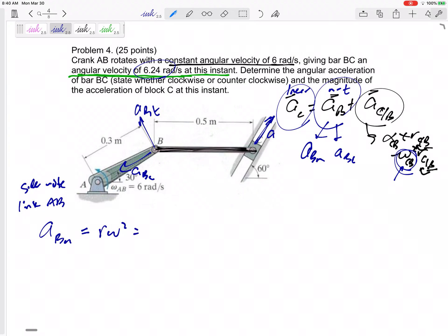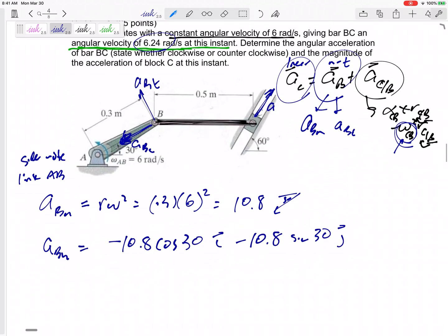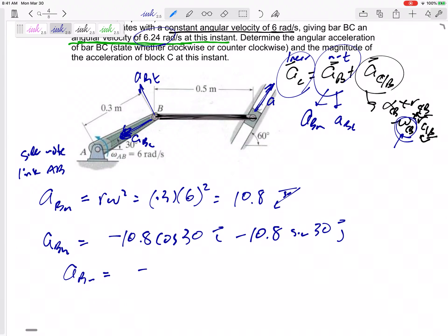All right, so A, B normal is R omega squared. It is 0.36 squared. It is 10.8, but it is at this angle, at this 30 degree angle right here. It is 10.8, 30 degrees from horizontal. A, B normal is 10.8. Let me look at this. Cosine 30 in the negative I and down 10.8, sine 30 in that J. So let me go ahead and give you some numbers. Negative 9.353 in the I and 5.4 in the J.